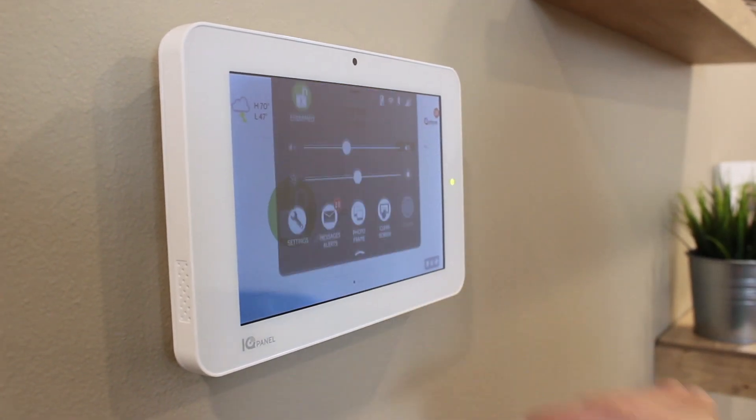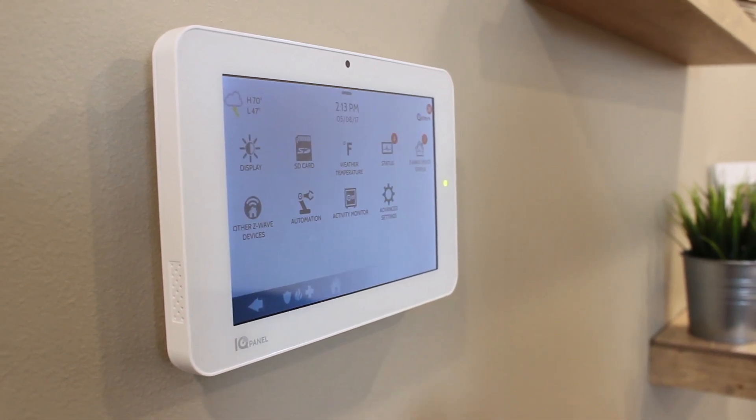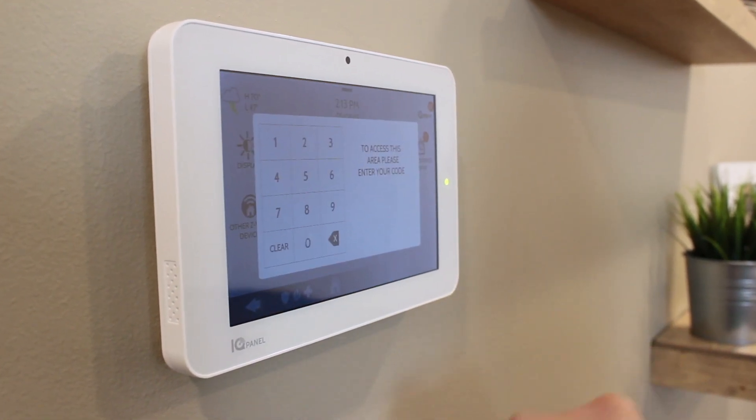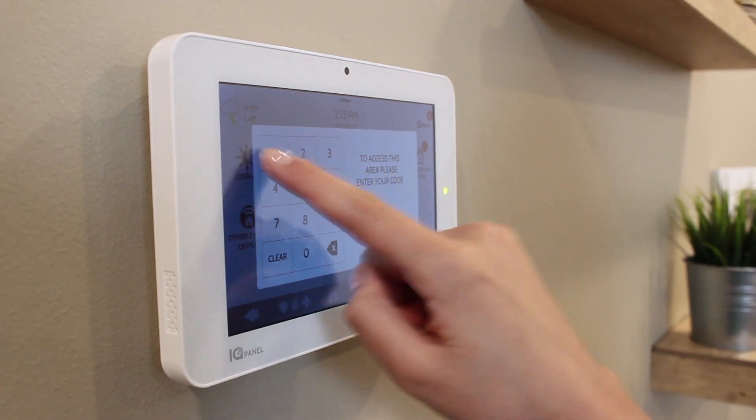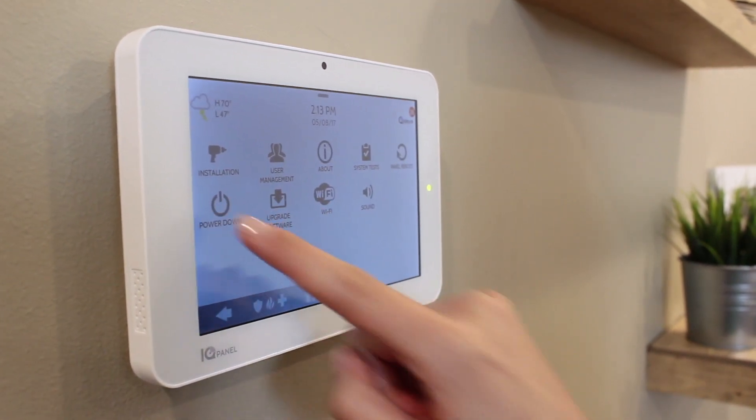The first thing we want to do is power down the panel. From the drop-down menu, select settings, advanced settings, enter your installer code, and then press power down.